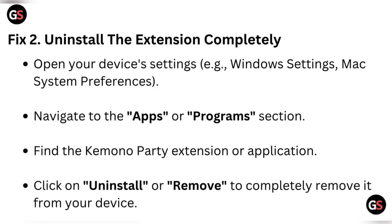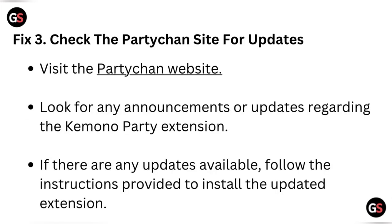Fix two: uninstall the extension completely. Open your device settings, navigate to the apps or programs section, find the Kimono Party extension or application, and click on uninstall or remove to completely remove it from your device.